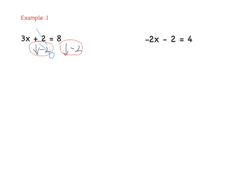We have just 3x on the left side. So 3x equals 8 minus 2, which is 6. We now have 3x equals 6, the same equation from the last video. 3x means 3 multiplied by x, so we need to divide to cancel it out — divide by 3 on both sides. 3 divided by 3 is 1x, so x equals 6 divided by 3, which is 2. Done.